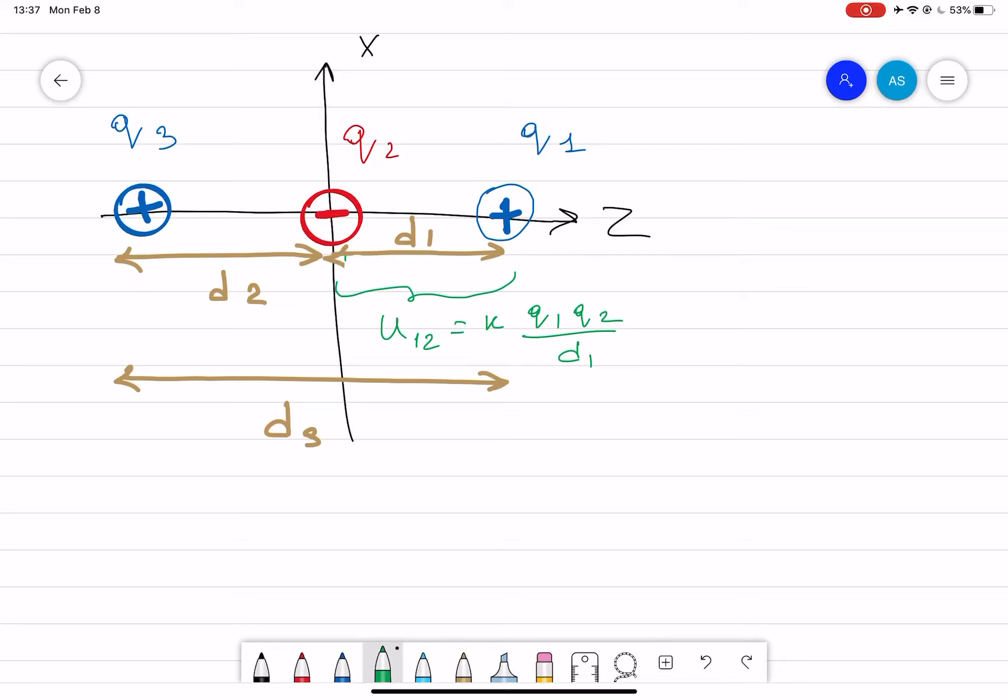In this case, q2 is negative, so we have to put this q2 negative. What about the potential energy between two and three? Which is k q2, which is negative, times q3, divided by d2.